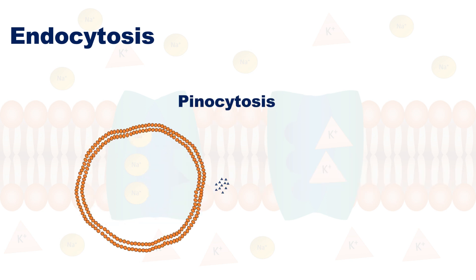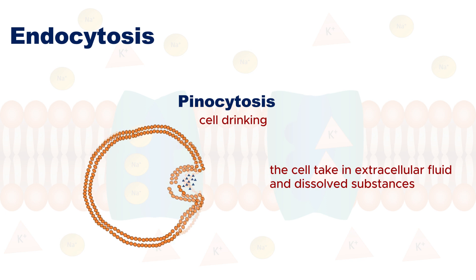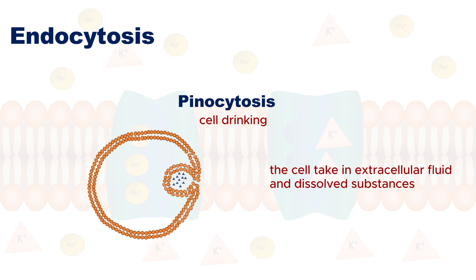Pinocytosis, also called cell drinking, allows the cell to take in extracellular fluid and dissolved substances, forming small vesicles that bring these materials into the cell.